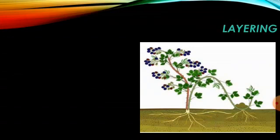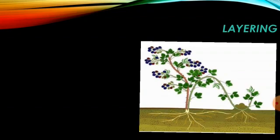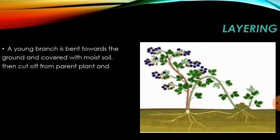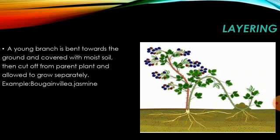The next process is layering. In this process, one of a plant's branches is bent into the ground and covered — that is, layered with soil. After that, the plant starts developing roots. Then this plant is cut from its parent plant and allowed to grow separately as a new plant. Examples of such plants are bougainvillea, jasmine, and vines.